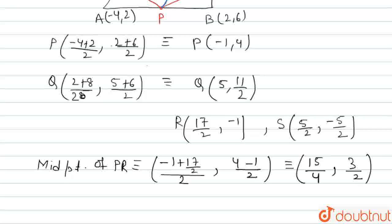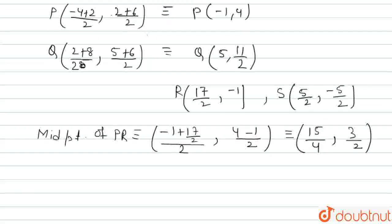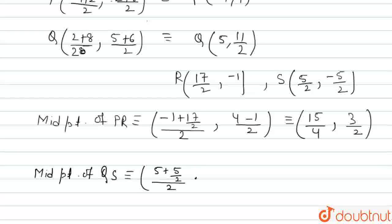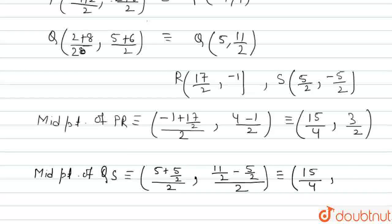The midpoint of QS will be: ((5 + 5/2)/2, (11/2 + (-5/2))/2). Upon solving this, we get the coordinates of the midpoint of QS as (15/4, 3/2).